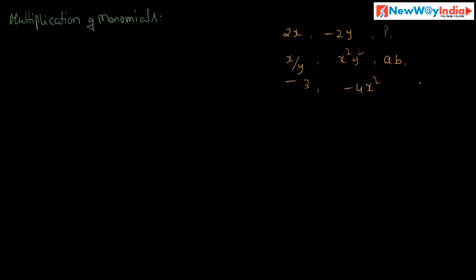Now, how do we multiply monomials? What are the steps? The first step is to consider the signs. If you multiply two monomials, for example minus 2x and minus 3y, first consider the signs of the factors. Here minus 2 is the numerical factor and minus 3 is the numerical factor. Both factors have the same sign — both are negative.